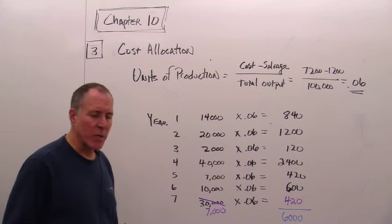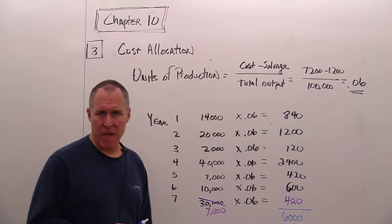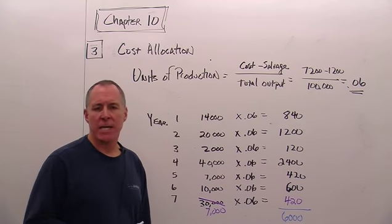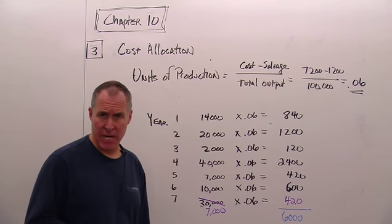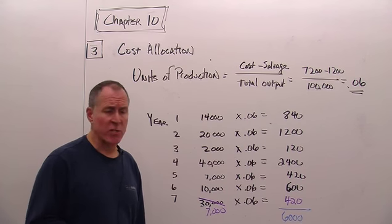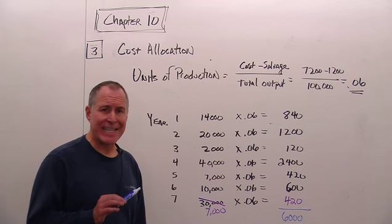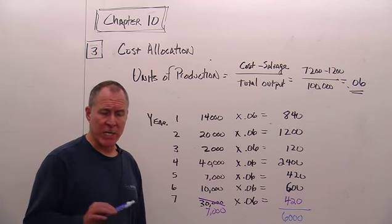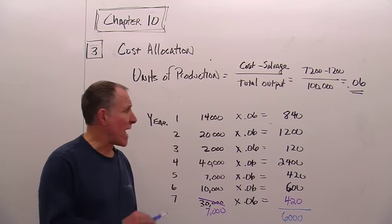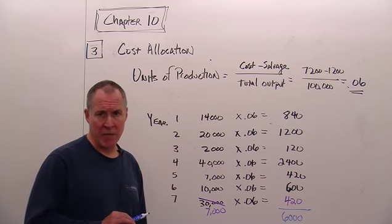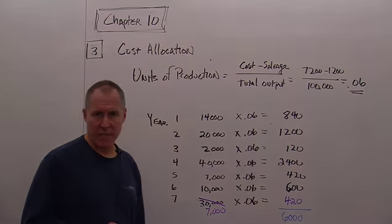There is one mention in the textbook of an income tax method, but we won't be studying that since this is financial accounting, not tax accounting. It is a statutory method that dictates the useful life, ignores salvage value, and is much like the double declining balance method — more depreciation in earlier years and less in later years.